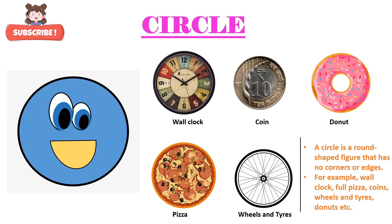The fourth shape that we are going to learn is circle. C-I-R-C-L-E, circle. Now let's learn the properties of circle. A circle is a round shaped figure that has no corners or edges. As you can see in the picture, a circle has no corners and no edges. For example, wall clock, a full pizza, coins, wheels and tires, donuts, etc.